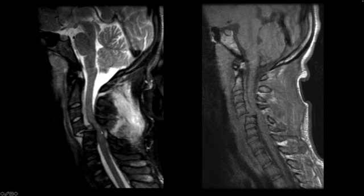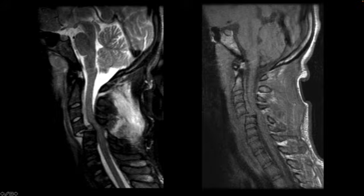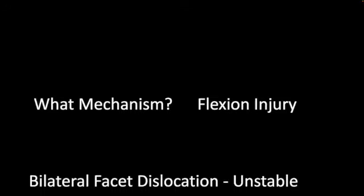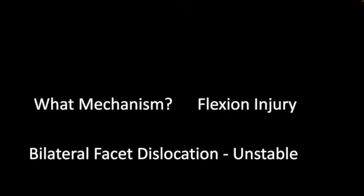You can see that the cord is compressed, with possibly elevated signal within the cord signifying edema and cord injury. There's edema posteriorly and even a small epidural collection along the backs of the vertebral bodies in the upper cervical spine. The mechanism behind this is a hyperflexion injury — the prototypical whiplash injury. When associated with facet dislocation, this is an unstable injury that requires surgery to fix.